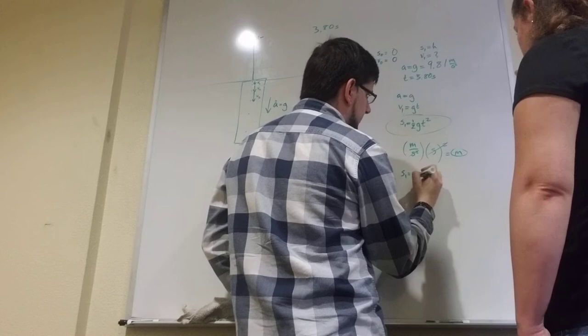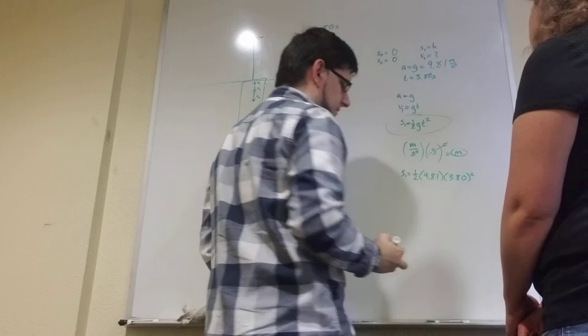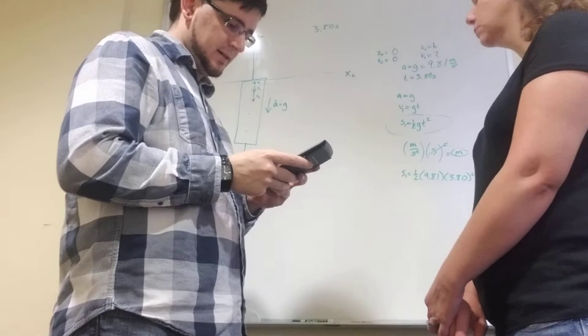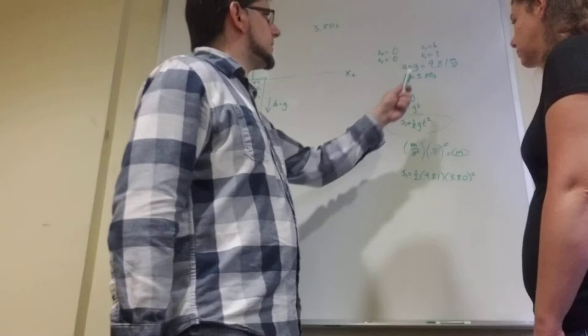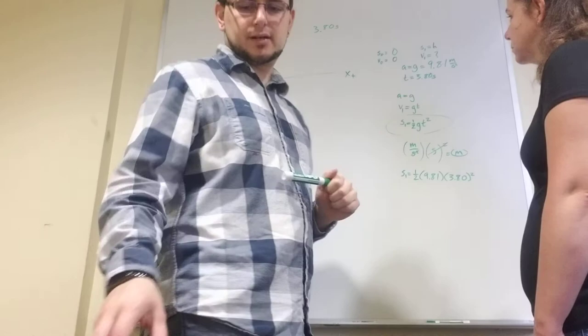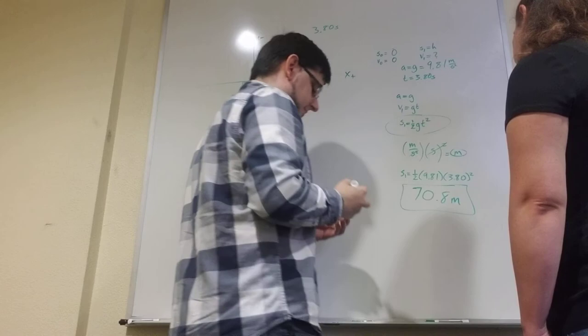So, now what we have to do is go ahead and plug in the numbers. So, S1 equals one-half, 9.81 times 3.80 squared. And then, we'll plug that into the calculator, and we'll get, so, 0.5 times 9.81 times 3.80 squared, and we get 70.82. But, our gravity, or our acceleration, and more specifically, the time we were given, have three sig figs. So, that's all we use for our answer. So, in this case, the answer will be 70.8 meters. So, the tower's got to be 70.8 meters tall. Okay?